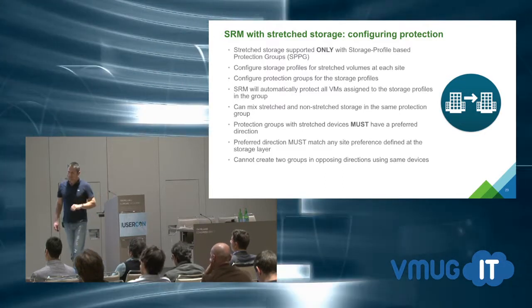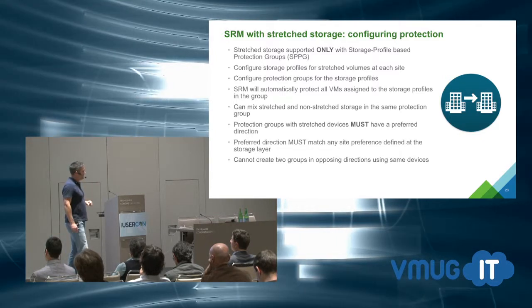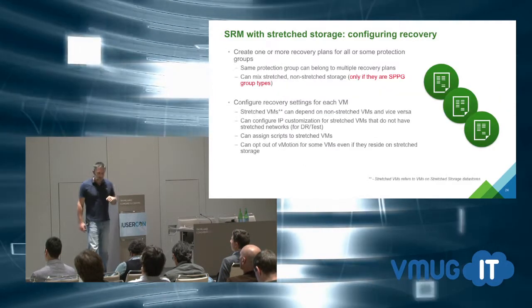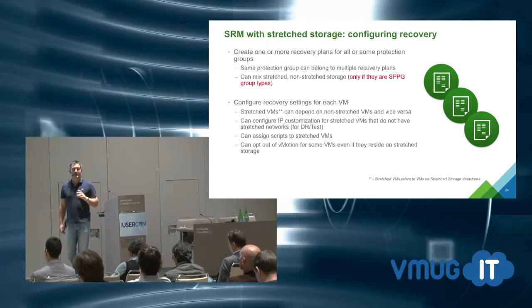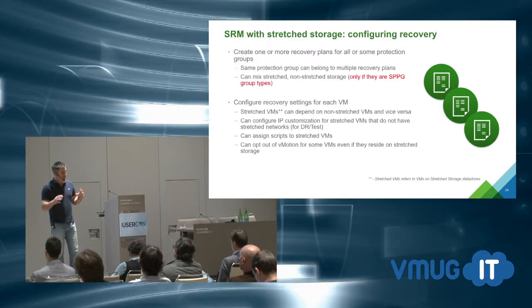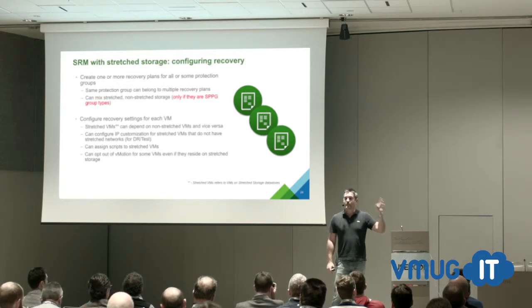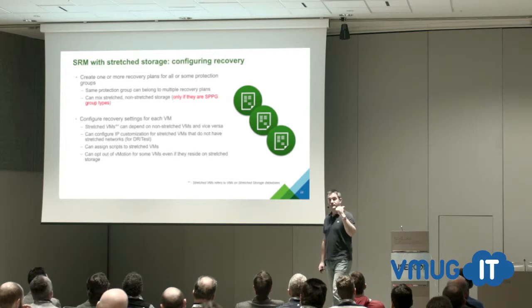You must use SPPGs in SRM 6.1 for stretch storage. You create the storage policy protection group around your new storage devices, then create recovery plans around them using a new recovery plan type in 6.1 that leverages these dynamic groups. If you have existing active-passive array replication and want to use the new dynamic type, you can delete your existing datastore groups in SRM and recreate them as SPPGs — supported for both stretched and non-stretched external array protection.